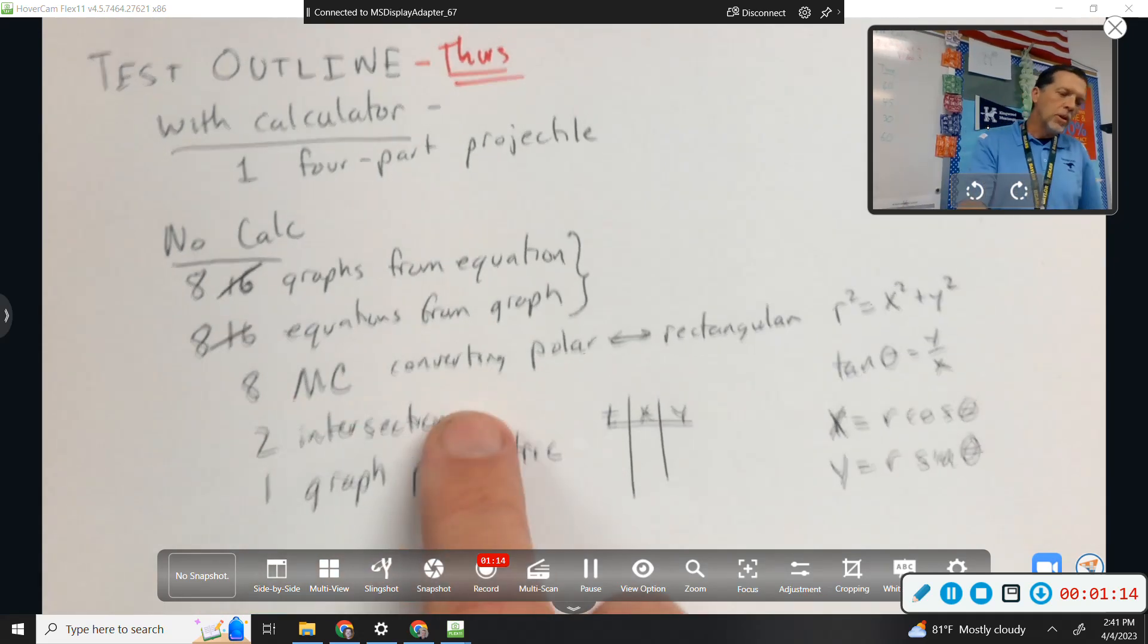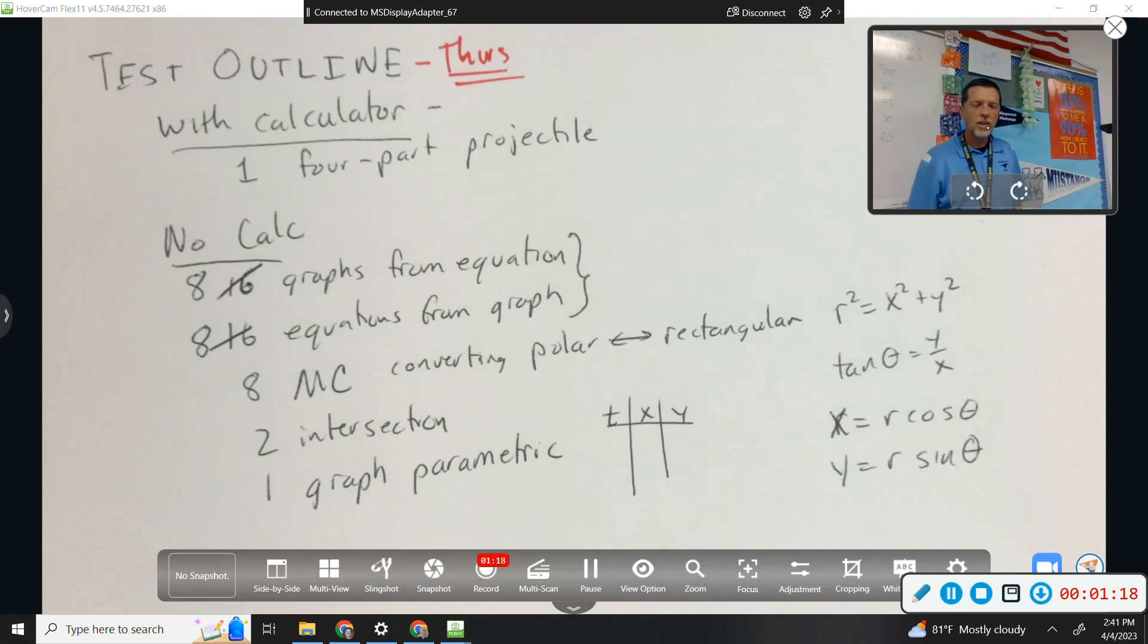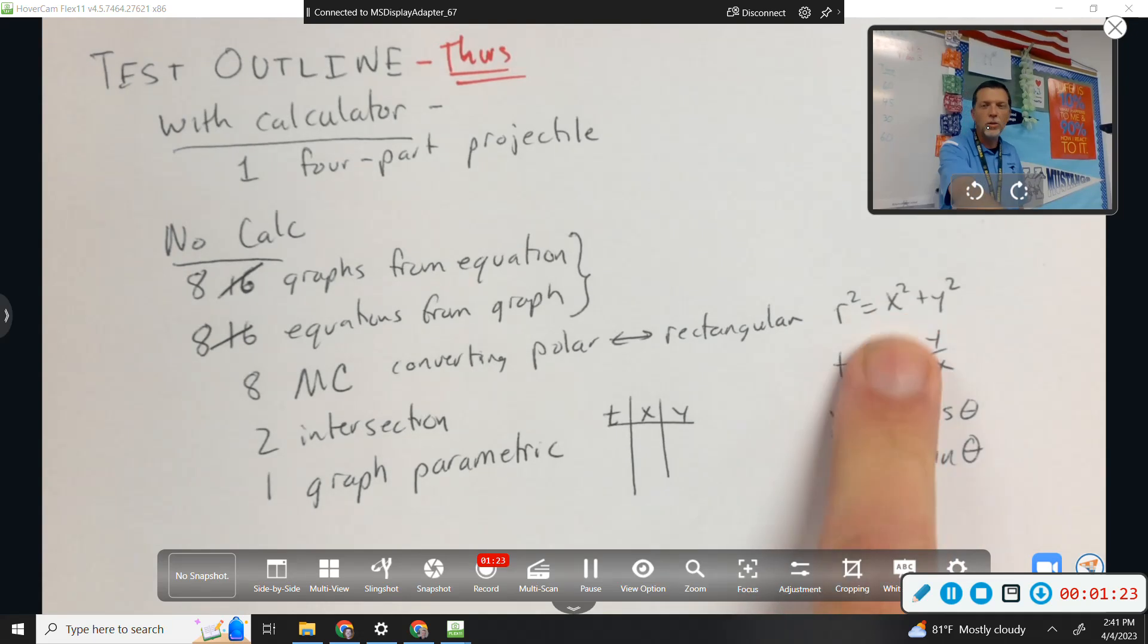Eight multiple choice, mostly on converting polar to rectangular points and equations. Some of them are just like what equations do you use, and so like which one is not true, and you know, we can scramble those up.